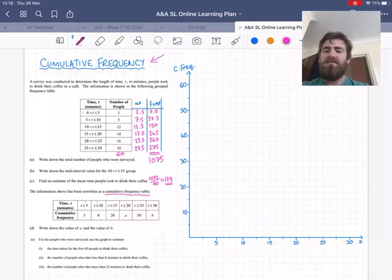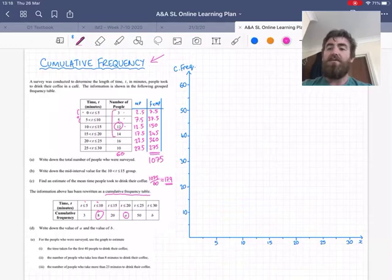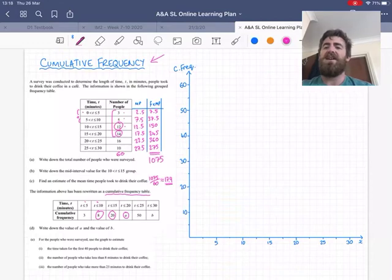And then, how many people had a time below 15 minutes? We could just do 3 plus 5 plus 12, adding up the first 3 groups. Or we could do our previous cumulative frequency, 8, plus the third group, 12. Either way, we'd get 20. We could add up the first 4 groups, or we could do the previous cumulative frequency of 20 and add it to the fourth group, 14. Either way we'd get 34.